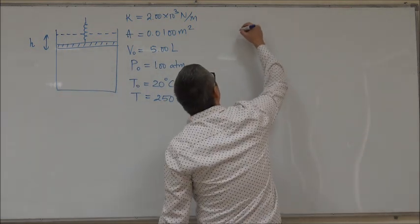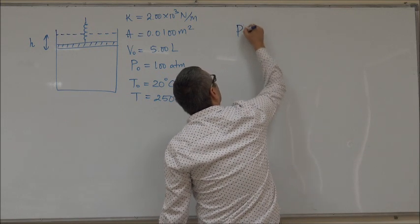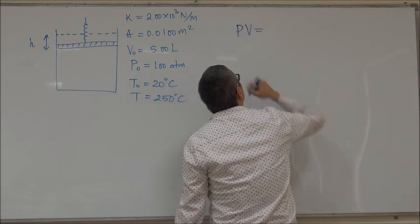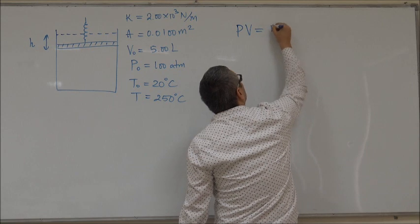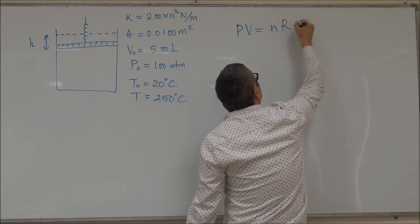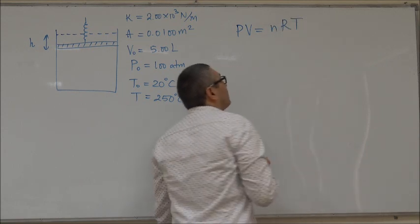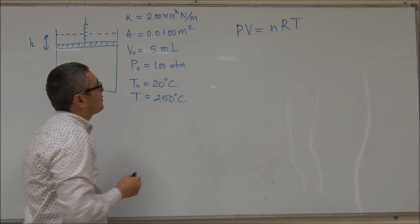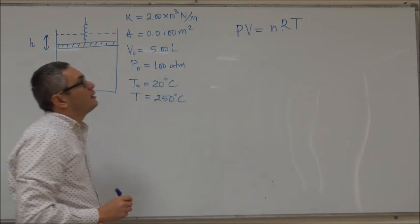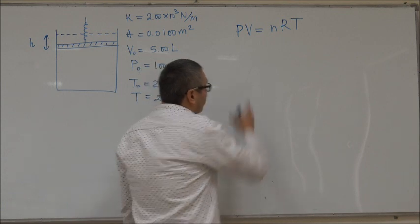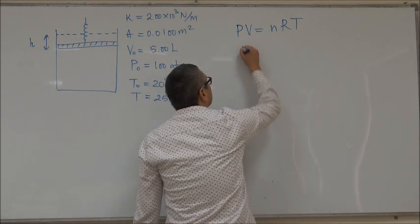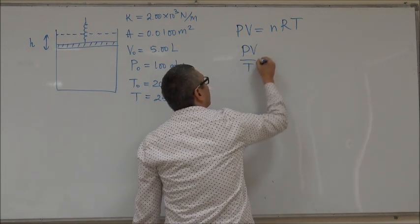We can write the equation for the ideal gas: in general, pressure times volume equals the number of moles times R times the temperature. PV = nRT. Temperature is measured in Kelvin, so we'll have to convert. From this equation you can say that PV over T is a constant.